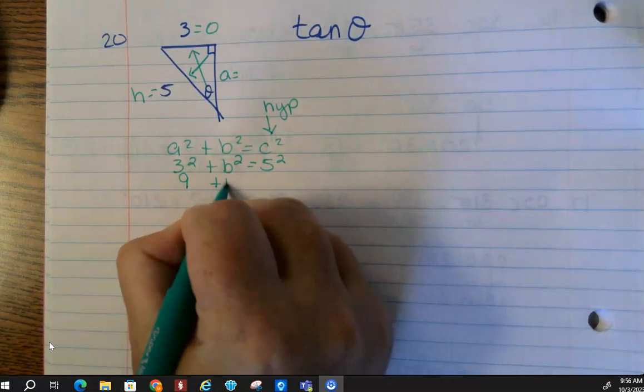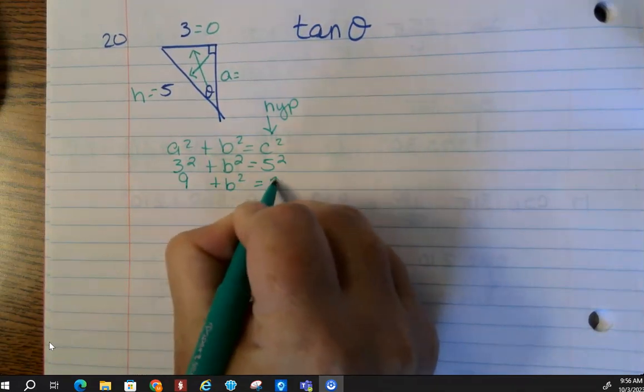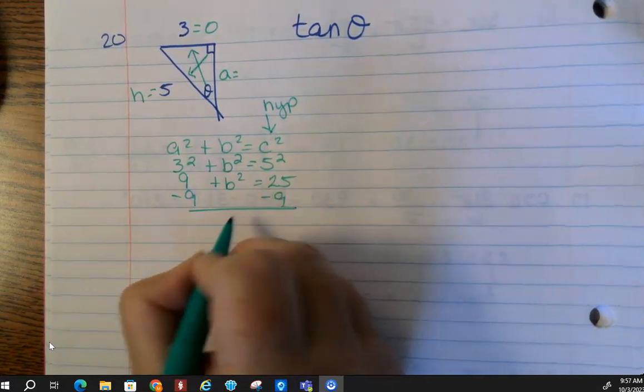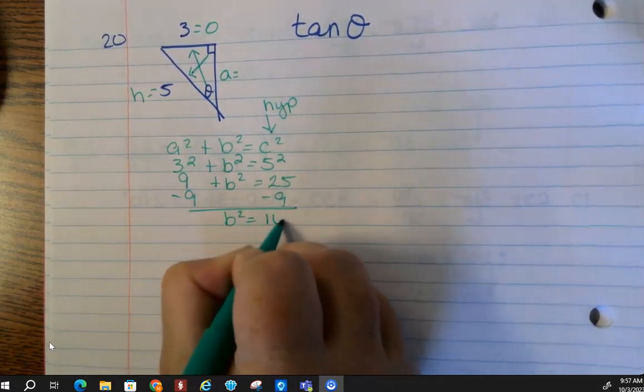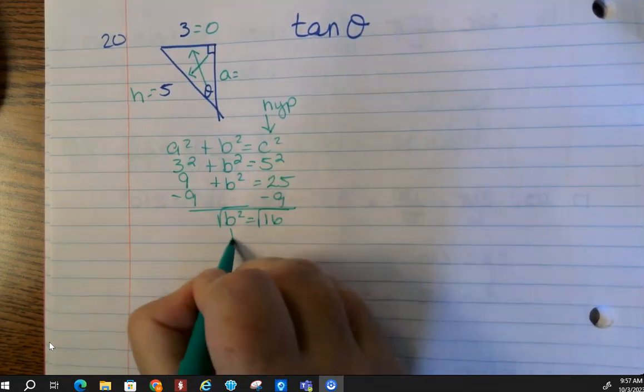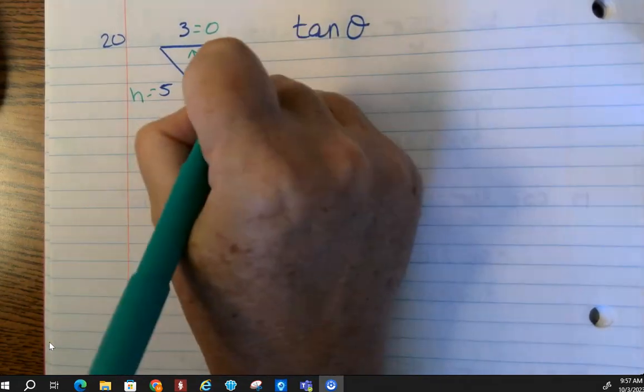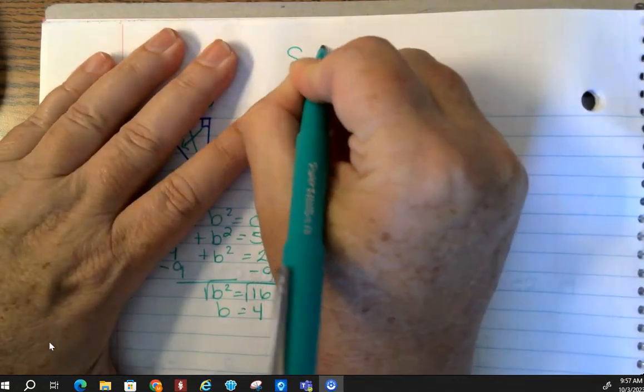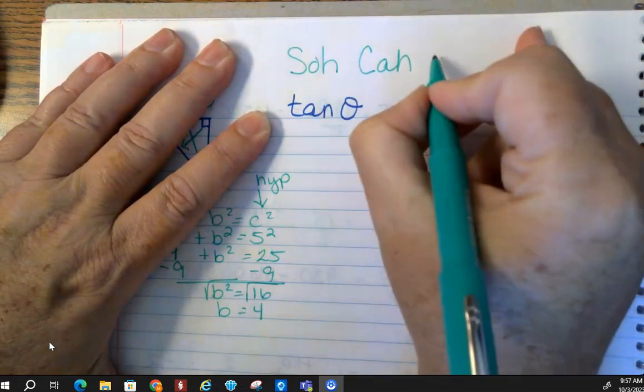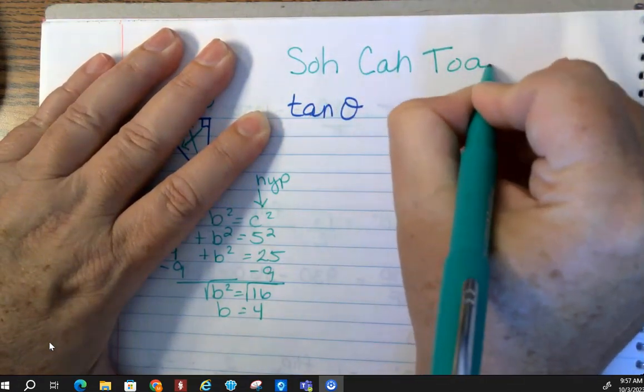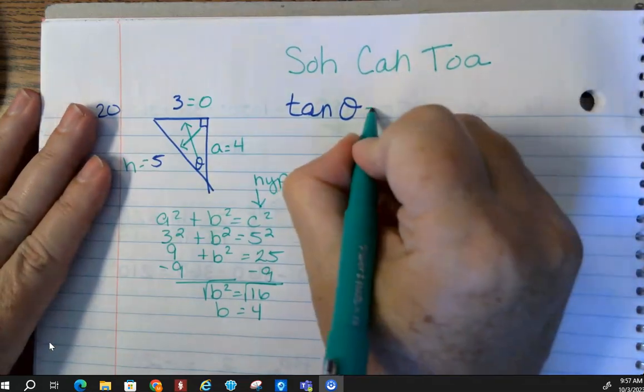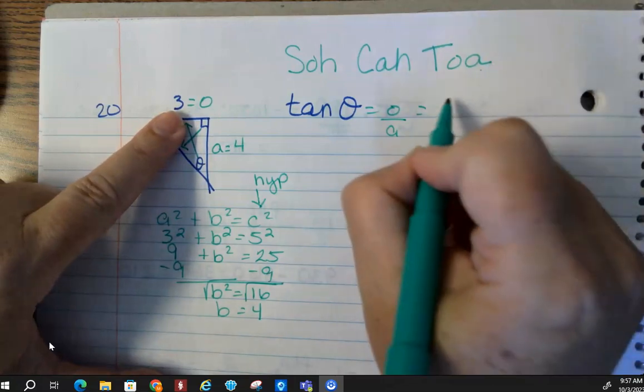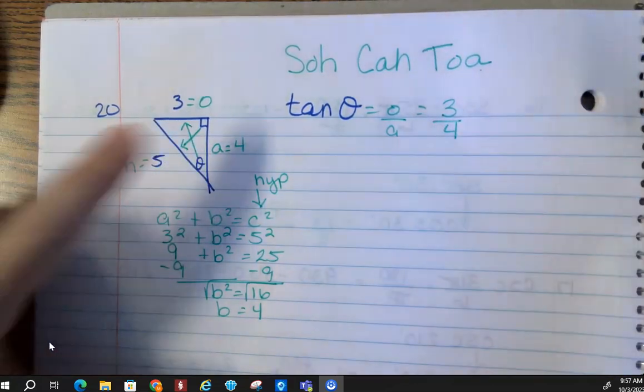So we get 9 plus B squared equals 25. Subtract your 9, B squared equals 16. Take your square root, and we get B equals 4. Now, going with SOH-CAH-TOA, tangent is opposite over adjacent. So opposite is 3, adjacent is 4.